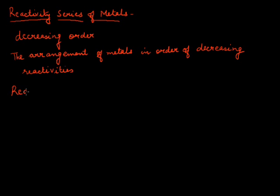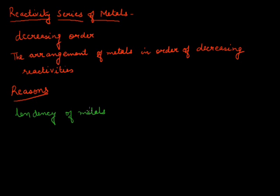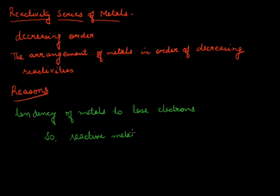We will now learn the reasons for different reactivities of different metals. In the activity series of metals, the basis for reactivity is the tendency of metals to lose electrons. If a metal can lose electrons easily to form positive ions, it will readily react with other substances and it will be a reactive metal. A reactive metal is the one which loses electrons readily.